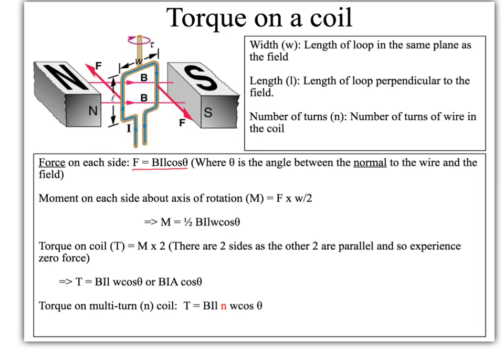If you think about it, you've got forces acting on both sides of the coil and they're both going to be trying to rotate the coil in the same direction. The forces are going to be in opposite directions but they're going to be working together to cause a rotation. So actually the total torque is going to be twice that number, ending up as BILWcosθ.